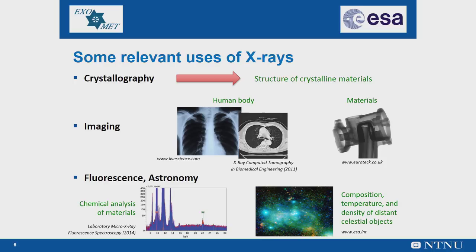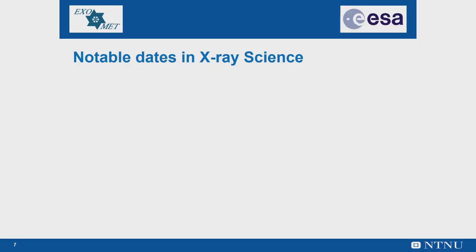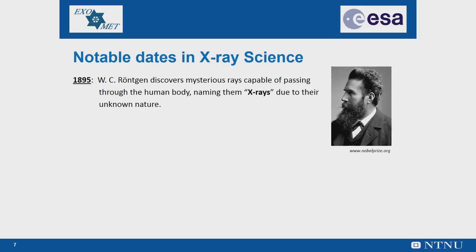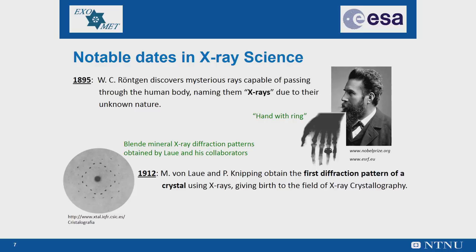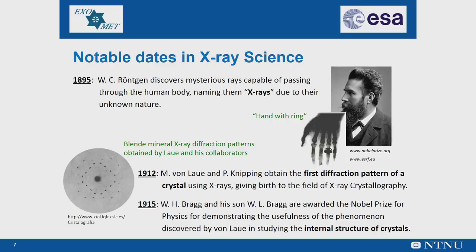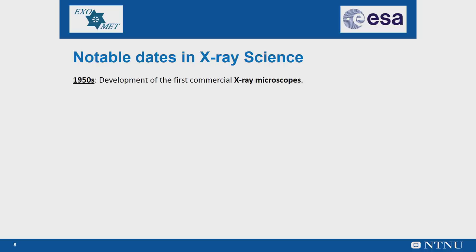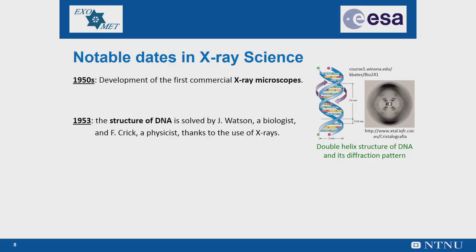In the history of X-rays, there are some notable dates. In 1895, Wilhelm Conrad Röntgen discovered mysterious rays capable of passing through the human body; because of their unknown nature, he called them X-rays. In 1912, Max von Laue and Paul Knipping obtained the first diffraction pattern of a crystal using X-rays, giving birth to the field of X-ray crystallography. In 1915, William Henry Bragg and his son William Lawrence Bragg were awarded the Nobel Prize for Physics for demonstrating the usefulness of that phenomenon in studying the internal structure of crystals. In the 1950s, the first commercial X-ray microscopes were developed. In 1953, the structure of DNA was solved by James Watson, a biologist, and Francis Crick, a physicist, thanks to the use of X-rays.